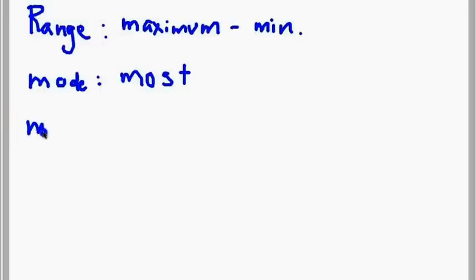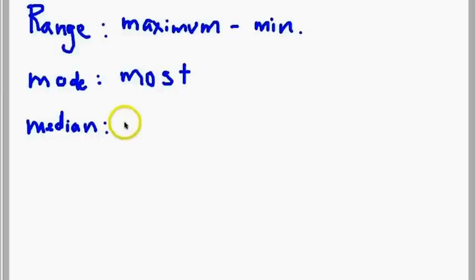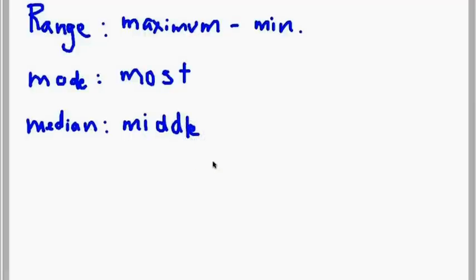Median is the next easiest one. Median sounds like the word 'middle,' doesn't it? So what I normally do is just remember that when I'm looking for the median, all I am doing is looking for the middle number of all my numbers — not the smallest, not the biggest, but the middle number.